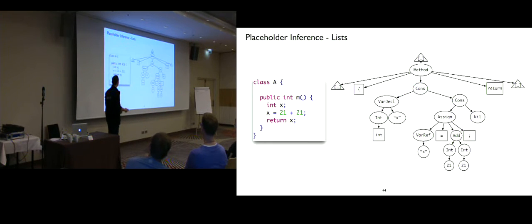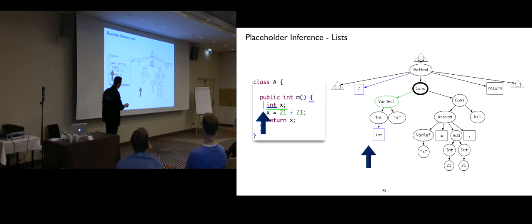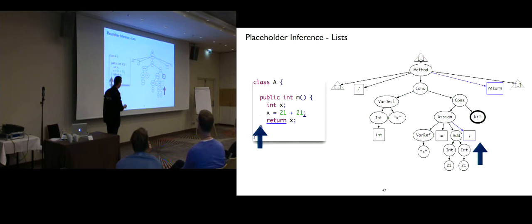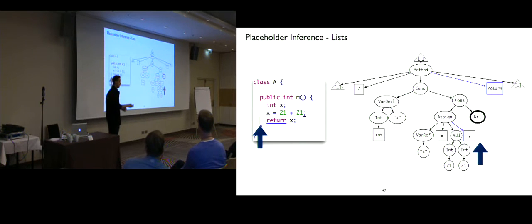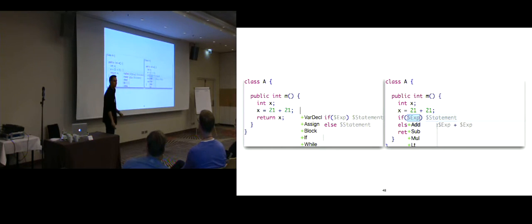Similarly for the method body list: if the cursor is behind the first statement, in the middle of the list, or at the tail of the list, we can find in the tree exactly where to add the statement. Code completion and formatting then take care of adding the statement to the program at the correct position.